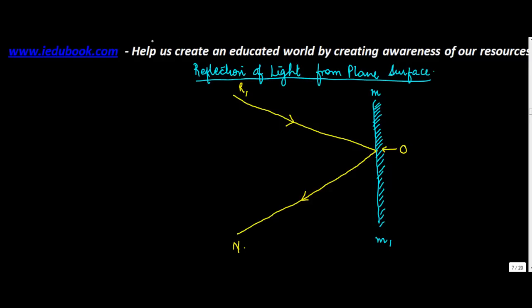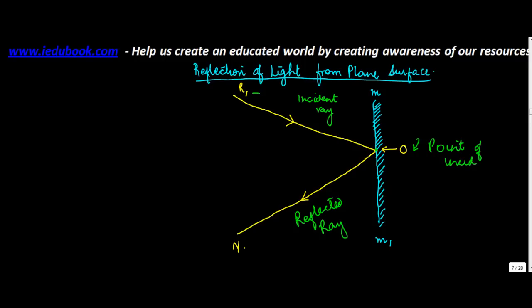Now there are certain terms which one should know. This ray which comes and hits the plane mirror is known as the incident ray. After hitting the mirror, the ray which goes back is known as the reflected ray. This point O at which the incident ray R1 hits the mirror is known as the point of incidence. So the reflected ray is ON, the incident ray is RO, and O is the point of incidence.